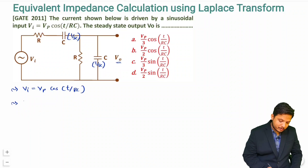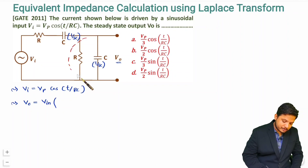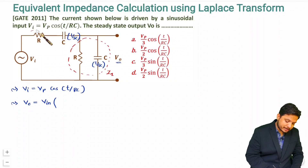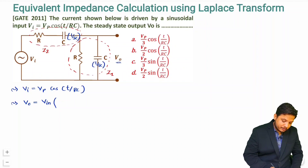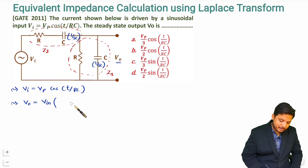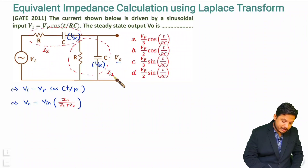In the Laplace domain, R stays as R, and C becomes 1/sC. If we want to find output v0, it equals vin multiplied by a voltage divider ratio. Calling the first impedance Z1 and the second Z2, vout = vin × Z1 / (Z1 + Z2).